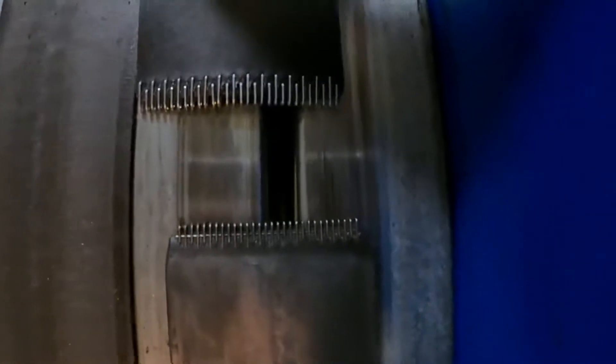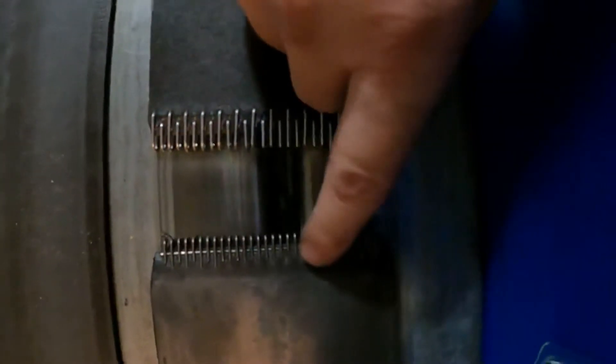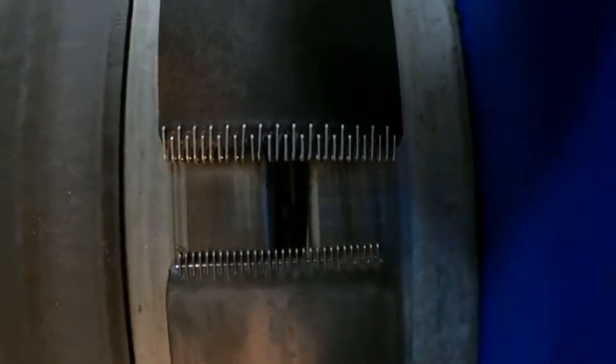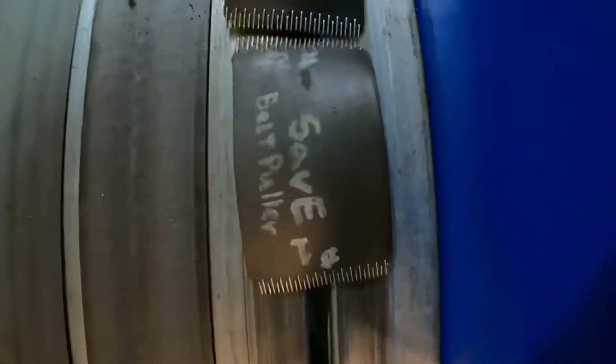We're going to use the old belt to pull the new belt in, but their lacing is different sizes. This one has number two lacing on it and this one comes with number one lacing, so we're just going to use another tool here. Here's our adapter piece. All we have to do is lace this into the number one side and this other side into the number two side.